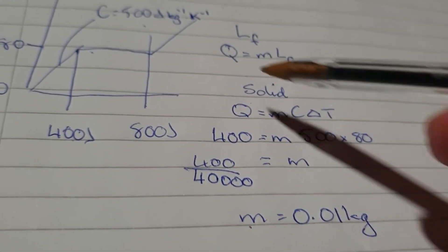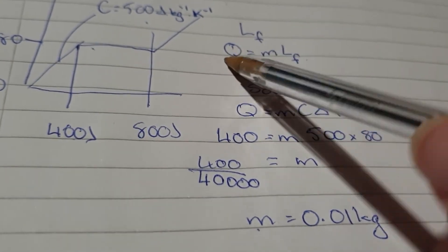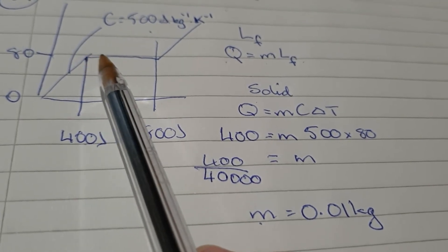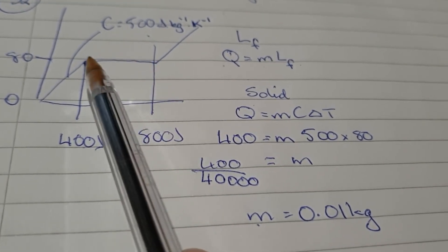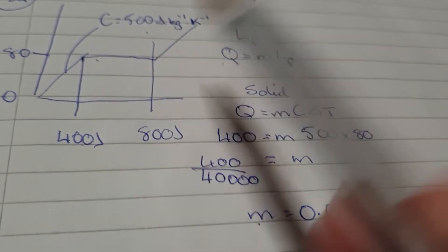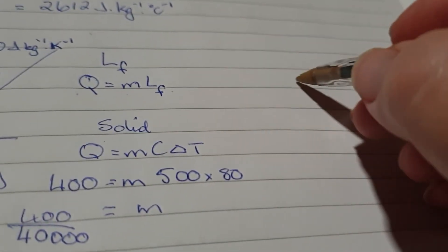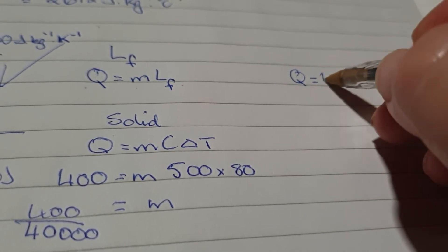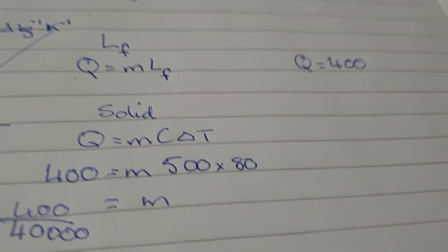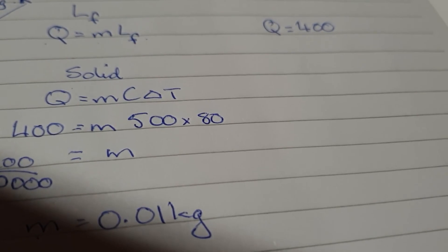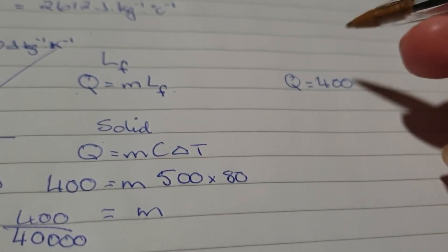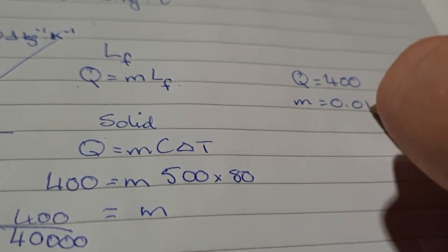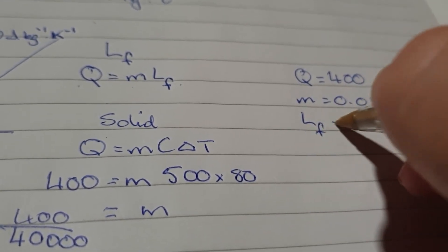So, I can use that M now up here. I can get the heat. So, the phase here, change of phase, is 400 again. So, Q equals 400. And we've got the mass is 0.01. So, latent heat of fusion shouldn't be hard to get.